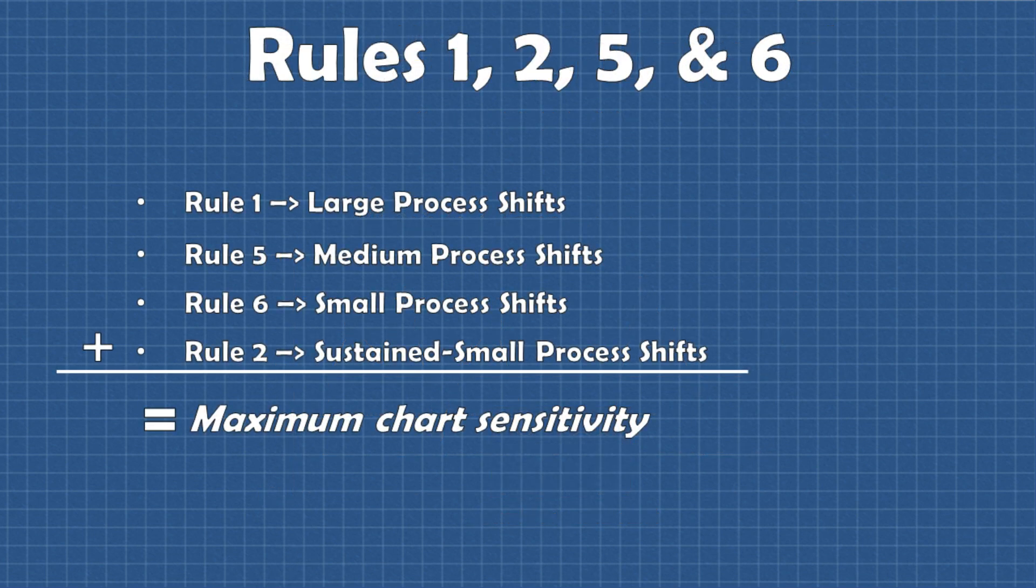Using rules five and six with rule one and two will achieve maximum control charting sensitivity. However if you're already getting a signal from rule one the additional rules won't provide any additional insight into the process because you already know the process is prone to large shifts.